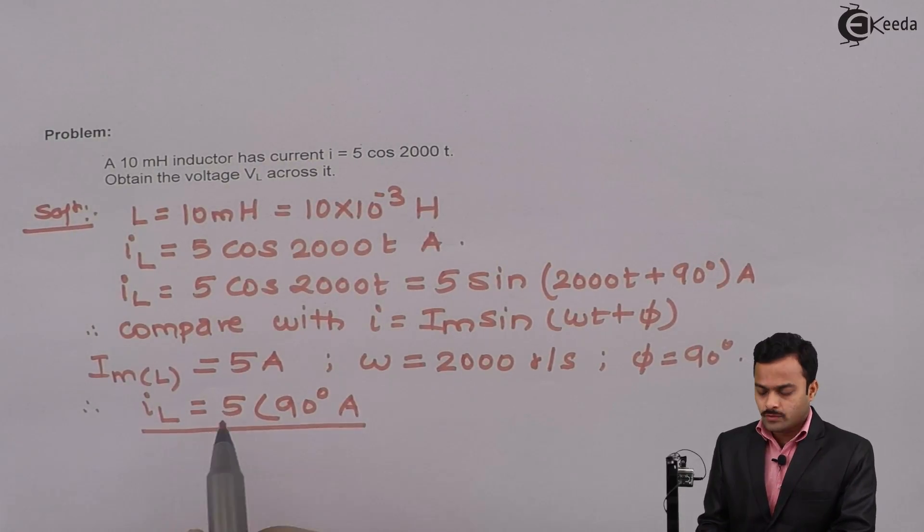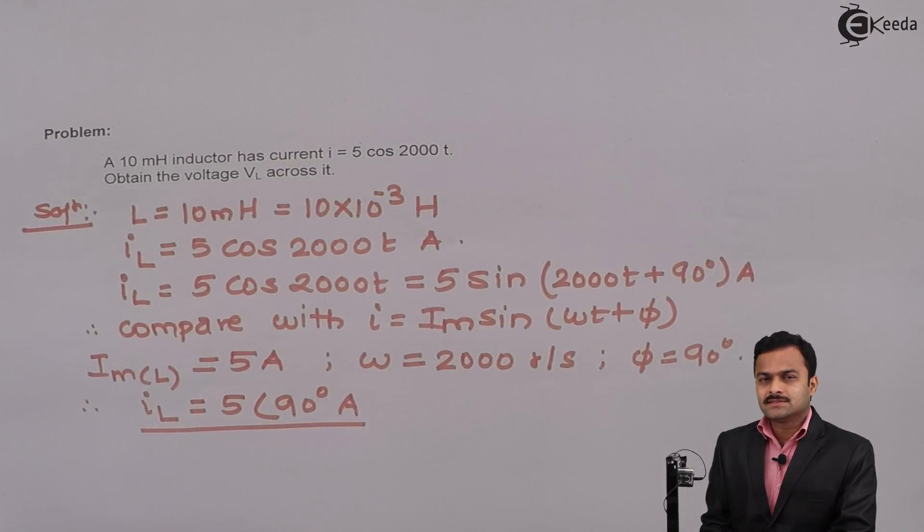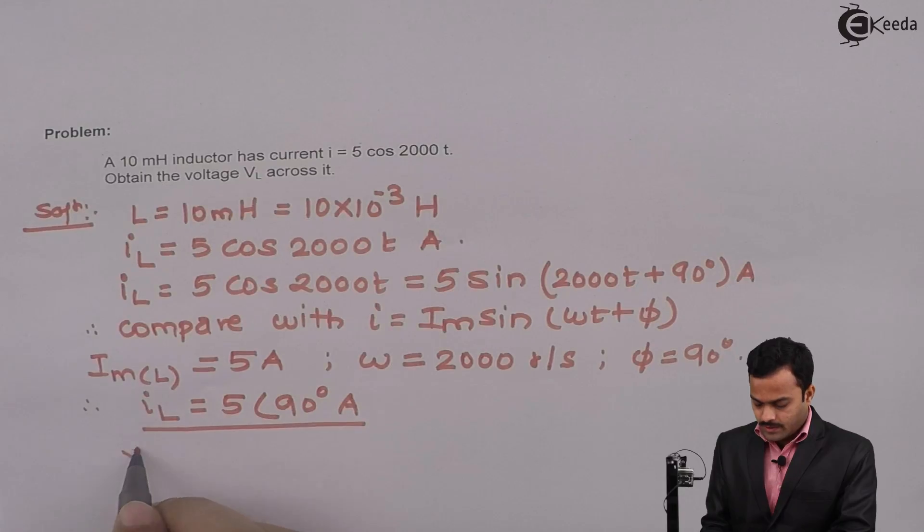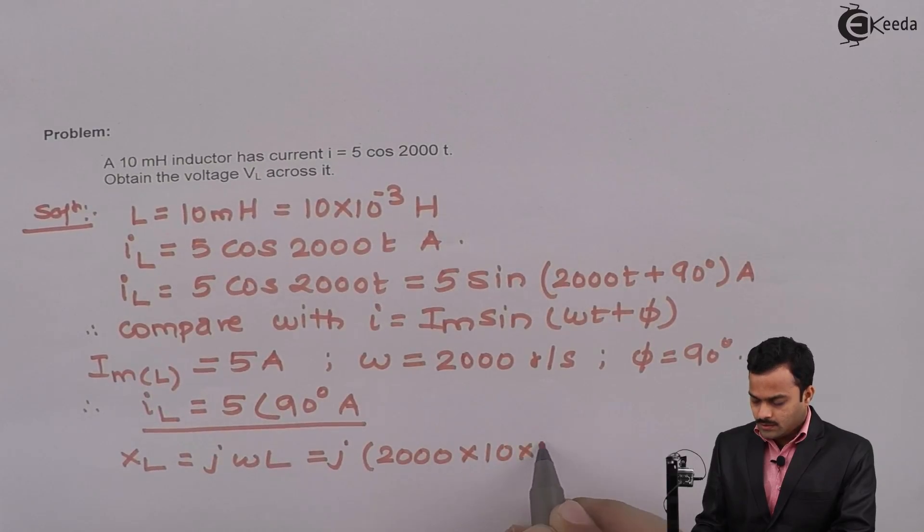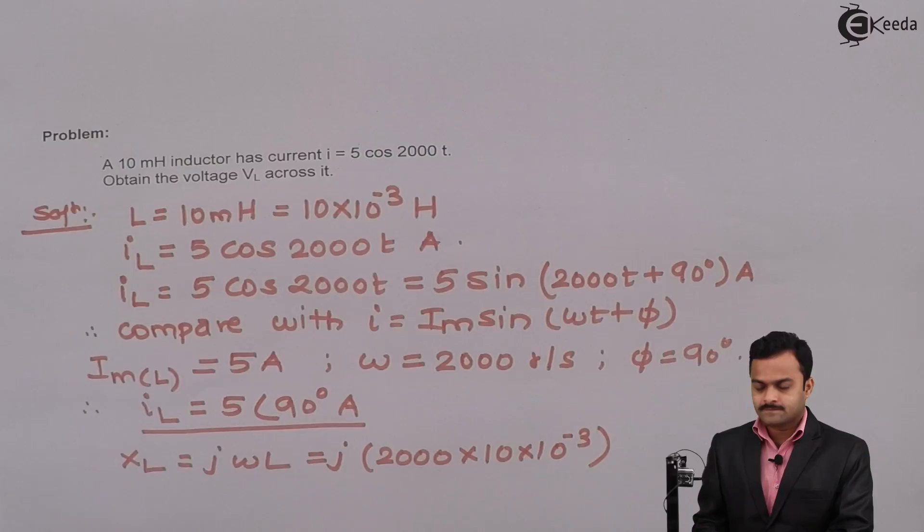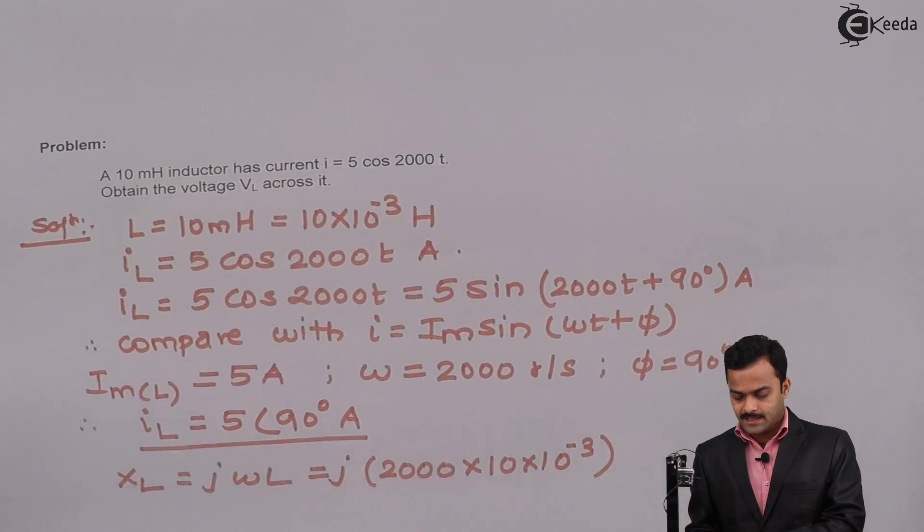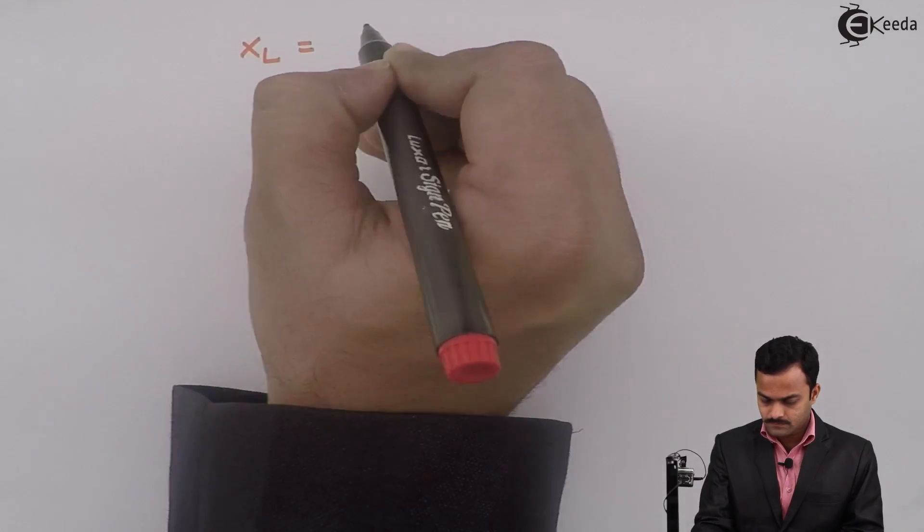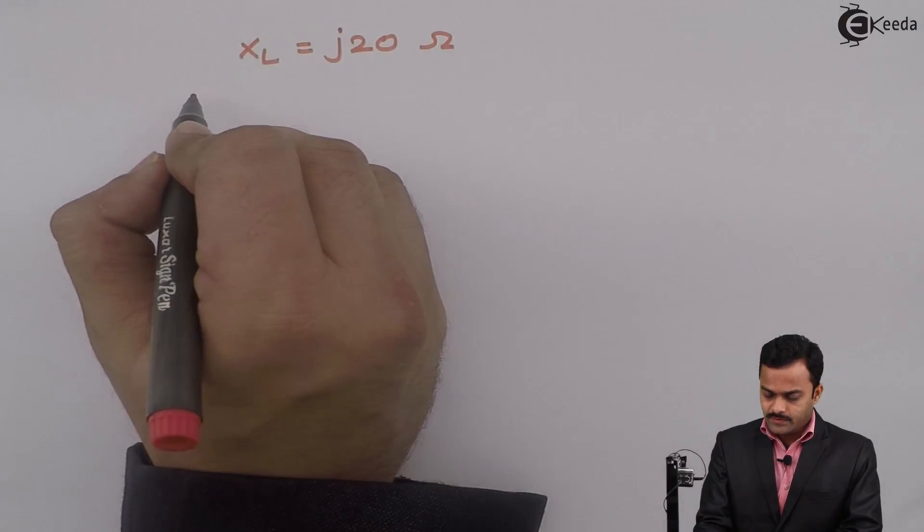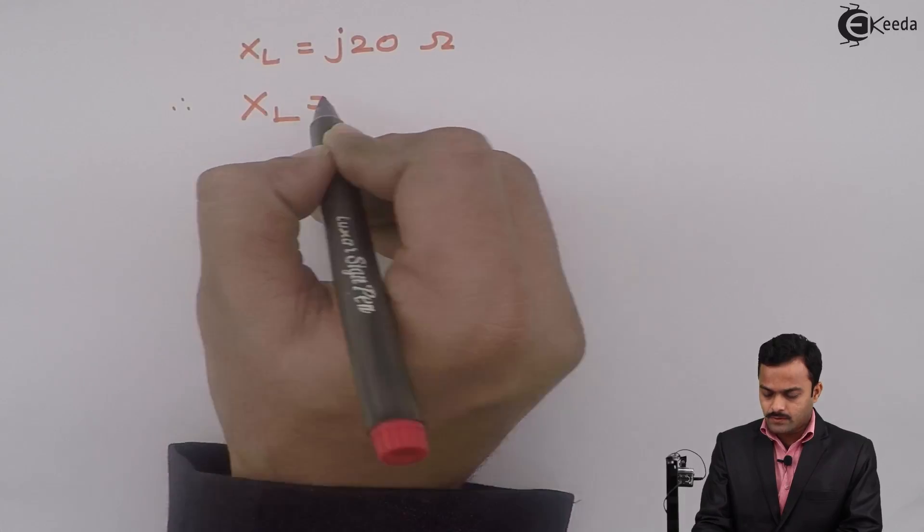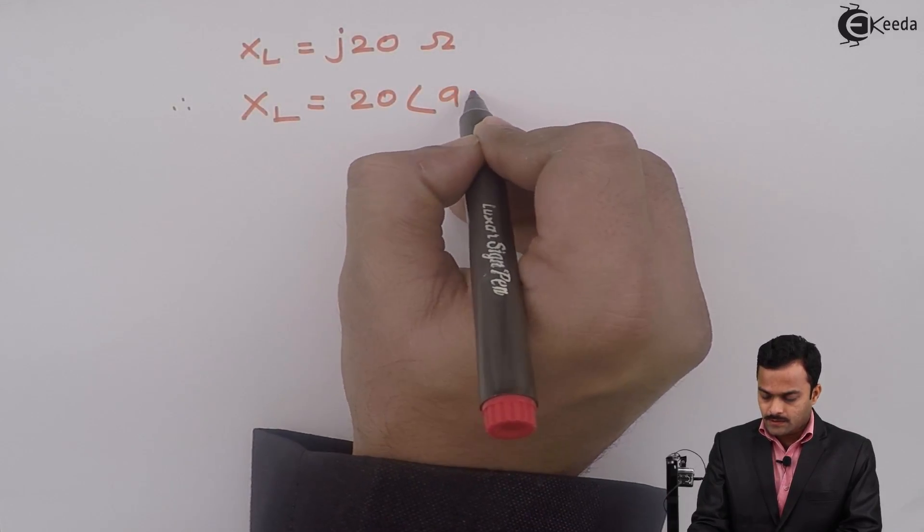Now I know I_L. To get V_L, I should know X_L, which is the inductive reactance. X_L is a complex quantity, so it's jωL. j omega is 2000 and L is 10 into 10 raised to minus 3. If I solve, I will get X_L as j20 ohm. Let's convert that into a phasor form: X_L equal to 20 at an angle 90 degrees ohm.